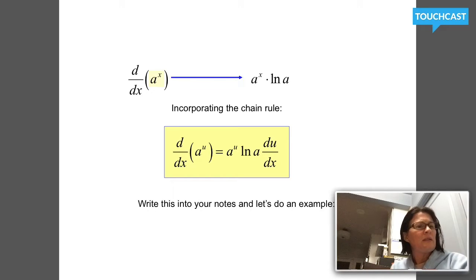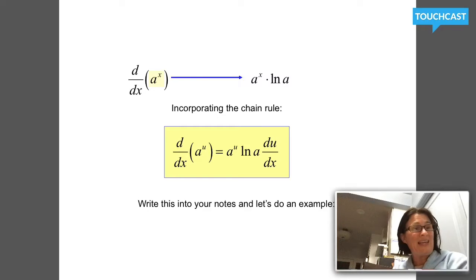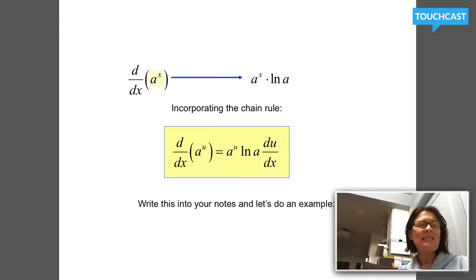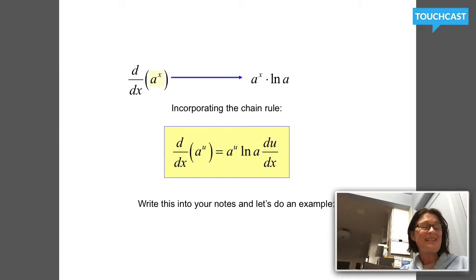When you were in Algebra 2 or Pre-Calculus and talked about exponential functions, you probably spent a reasonable amount of time using functions with a base like 2 to the x or 3 to the x — some friendly number raised to the x. Well, in calculus, at least 90% of the time when you see an exponential function — some base raised to an exponent that's a variable or function of a variable — that base is going to be e, which means we get to use the derivative rule we just learned: the derivative of e to the x is e to the x.